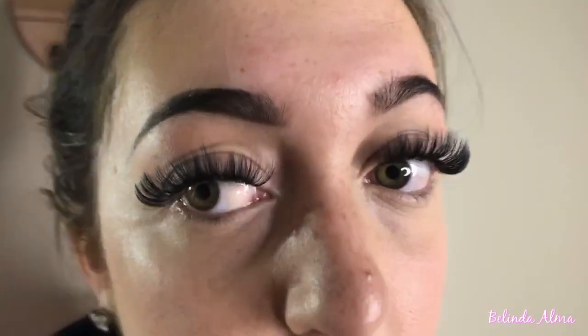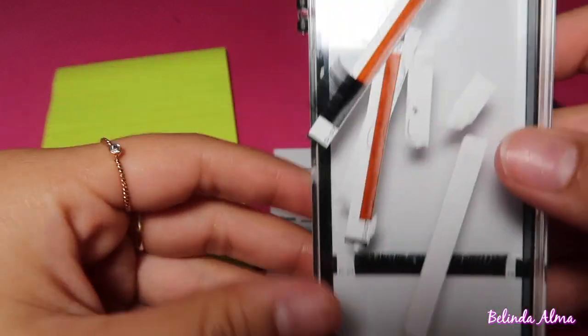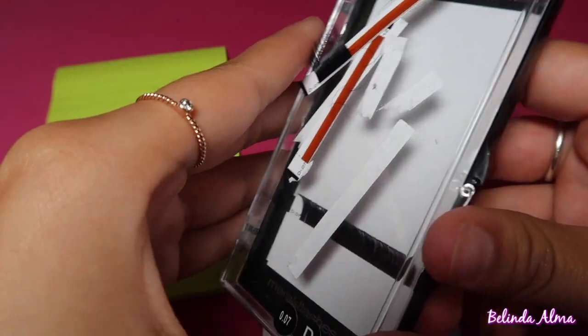Hey guys and welcome back to my channel. Today I'm going to show you how I got this voluminous volume look. I'm using the Meraki lashes in 0.07, and this was 12. You can get whatever lengths and sizes you want, but I use 0.07.